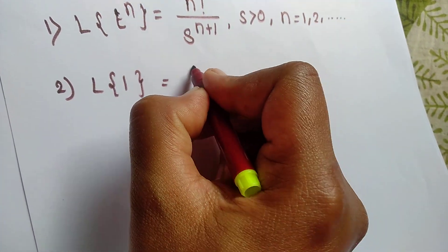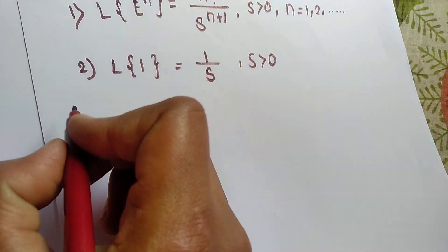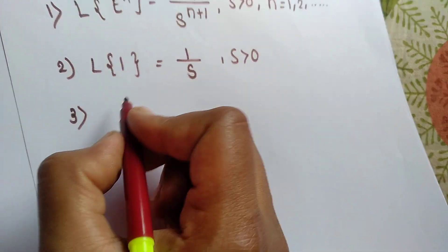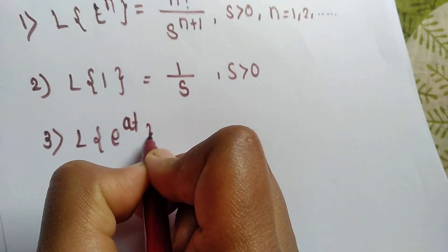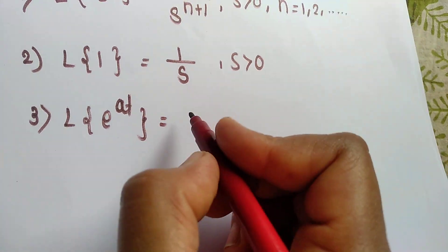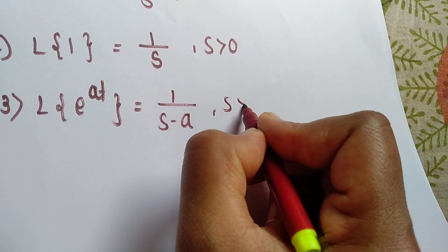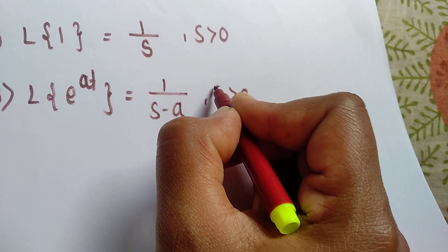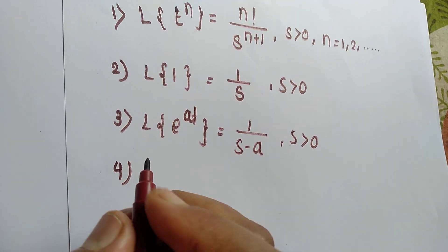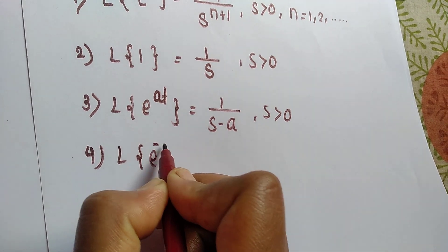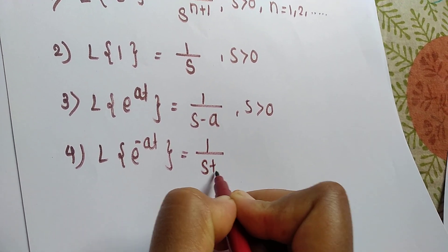Second formula: Laplace of 1 is equal to 1 upon s, with condition s greater than 0. Third formula: Laplace of e raised to at equals 1 upon s minus a, with s greater than 0. Fourth formula: Laplace of e raised to minus at is equal to 1 upon s plus a, here also s is greater than 0.